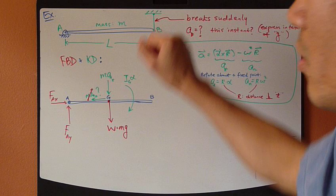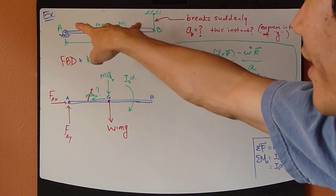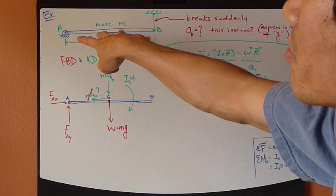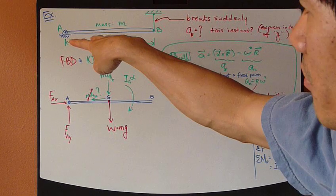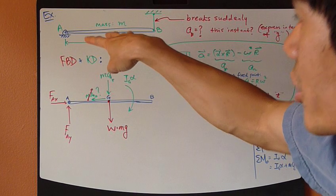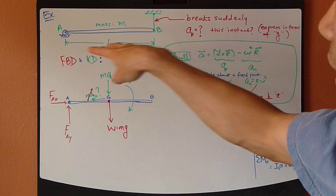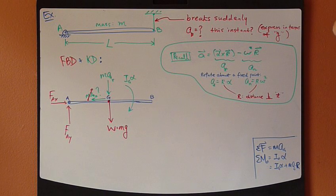Now, at this instant also, velocity is zero. It's just going to start to move, but its velocity is still zero at this instant. But the acceleration is there. It starts to have acceleration. You have to find what the acceleration is at this very instant.